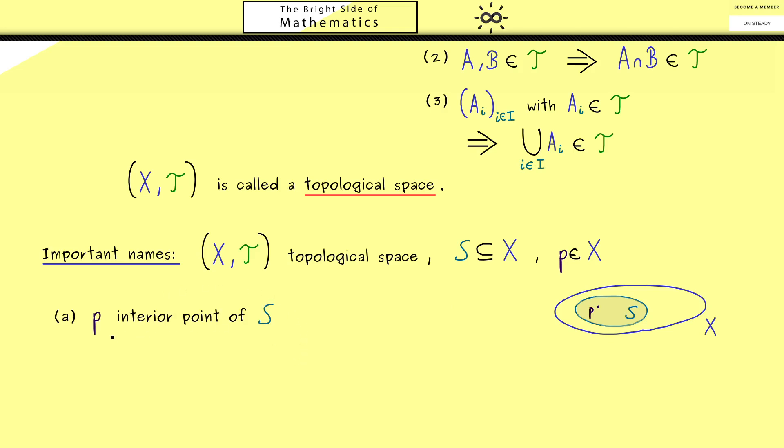Of course, this alone is not so interesting, but we could have even more. And then we talk of an interior point of S. So what this exactly means we can now define. Indeed, what we need is an open set, and maybe let's call it U here.